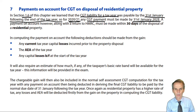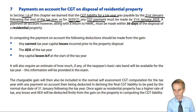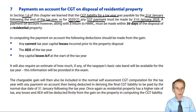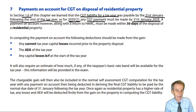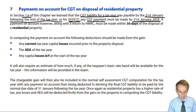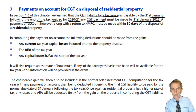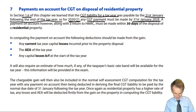If the residential property being disposed of is simply your primary main residence, you're going to get private residence relief, and for the vast majority of taxpayers when you sell the house you've lived in, that disposal will attract private residence relief that will effectively exempt all of that gain. So it's only gains that don't attract private residence relief that suffer the higher CGT rates and the quicker payment date.